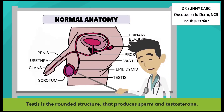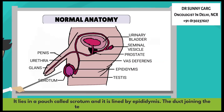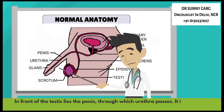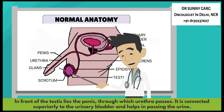The testes is the rounded structure that produces sperm and testosterone. It lies in a pouch called the scrotum and is lined by the epididymis. The duct joining the testes is called the vas deferens. In front of the testes lies the penis, through which the urethra passes.